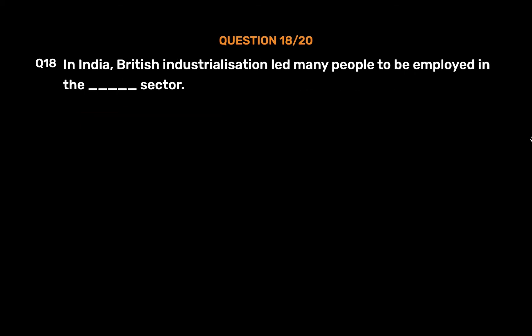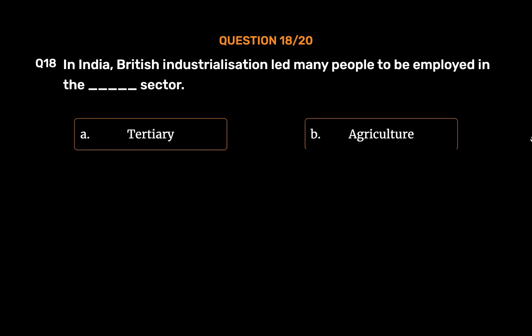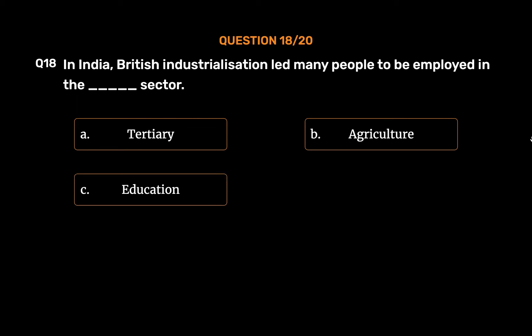Question 18: In India, British industrialization led many people to be employed in the _____ sector. Options: A. Tertiary, B. Agriculture, C. Education, D. Industrial. The correct answer is Option D: Industrial.